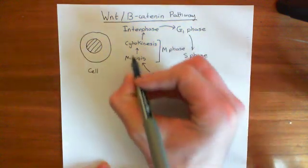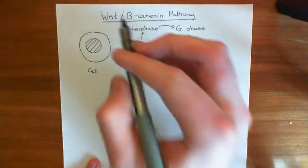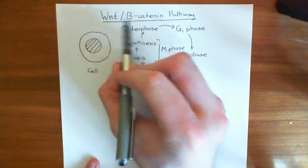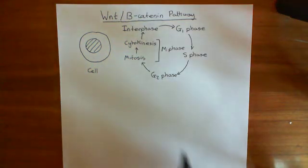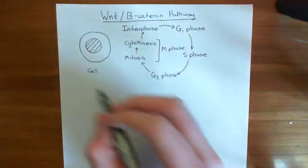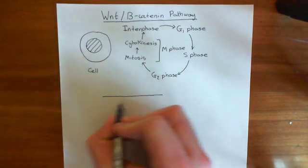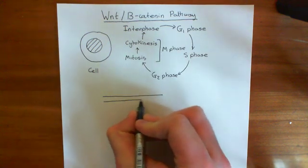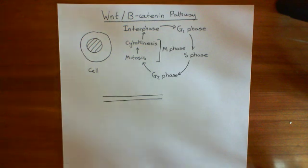You can give it a lot of chemical signals. One of these signaling pathways we're looking at is the Wnt beta-catenin pathway. In the cell membrane of this cell, in the phospholipid bilayer, there is a receptor for this protein, Wnt.